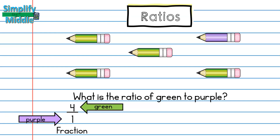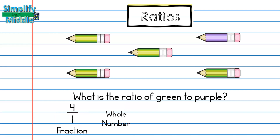You might be asking yourself, can I simplify the number 4 over 1 to just 4? And the short answer is no. We do not write a ratio as a whole or a mixed number because we are comparing two items and need to show two numbers that describe our items. We never write an improper fraction as a mixed number for this reason.